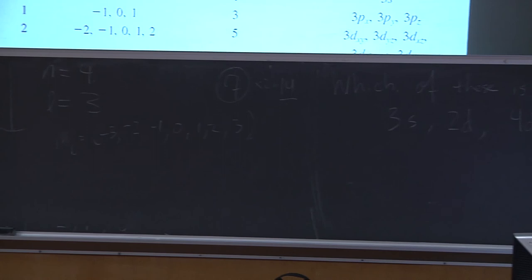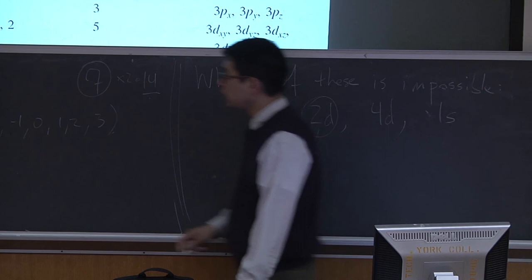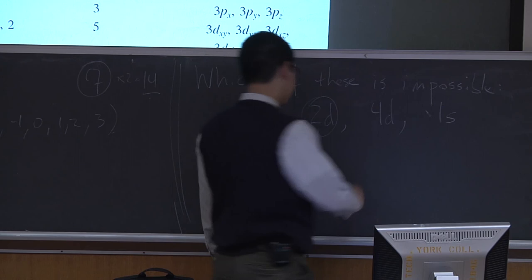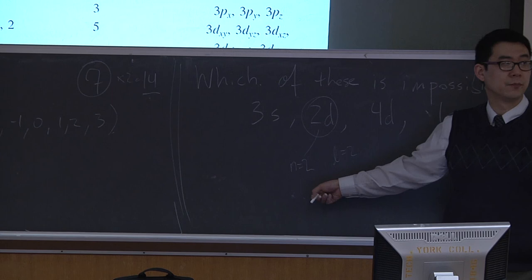Last question: which of these is impossible — 3s or 2d? The answer is 2d, because that has n=2 and d corresponds to l=2. But l can only go up to n−1, so for n=2, l can only go up to 1. Therefore, 2d is impossible. Have a good weekend.